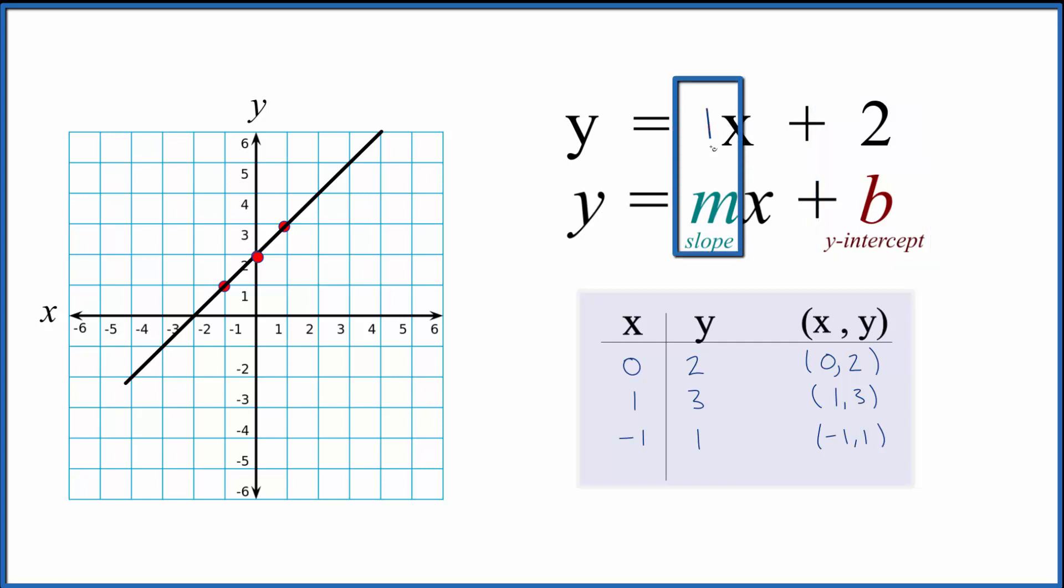So for our slope we'll say we have rise over run, 1, and we can just put 1 over 1. So we have rise over run. So we'll take a point, let's just put it on the y-intercept here. We'll rise, we'll go up 1 and over 1, and there's our point.